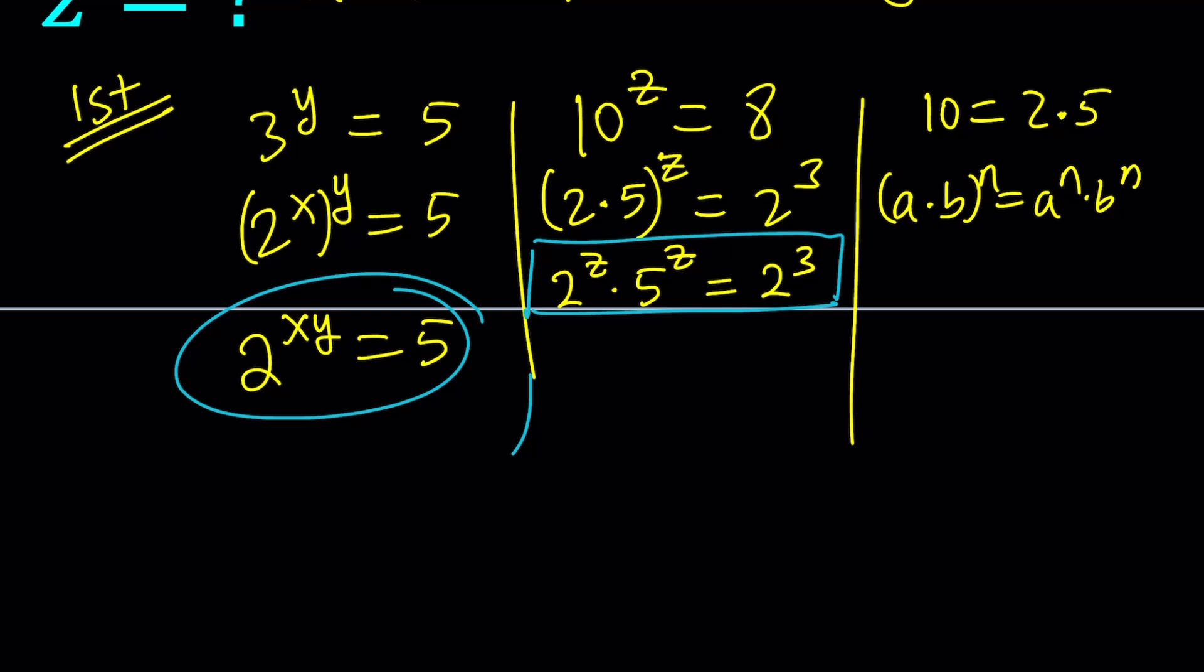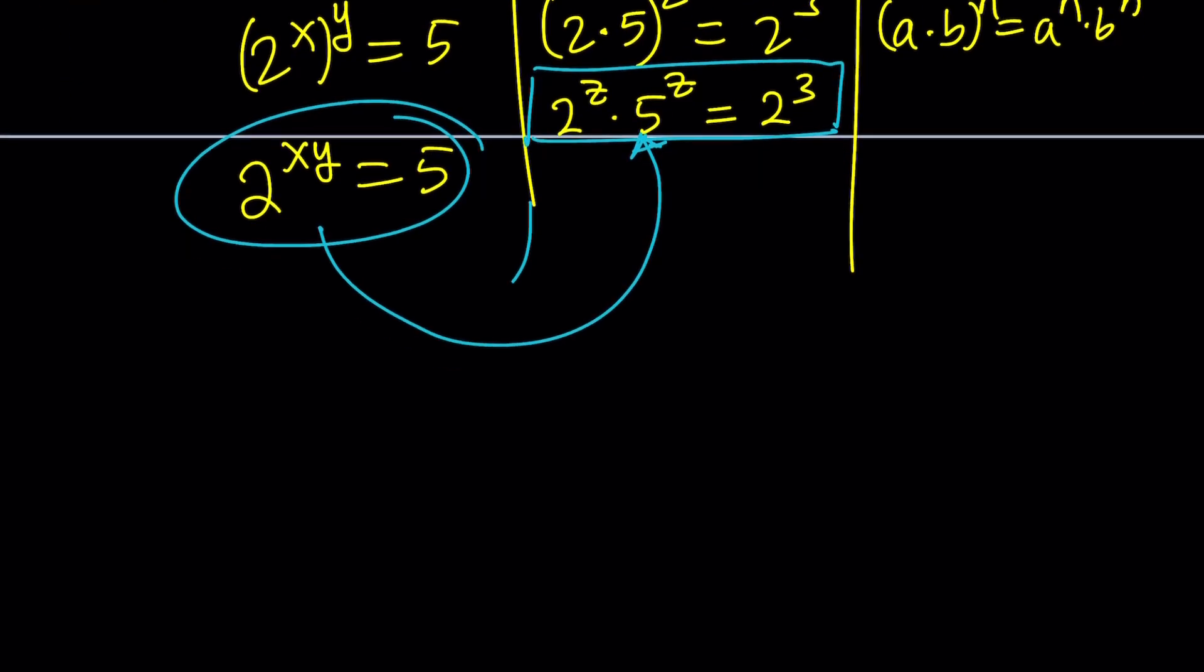You could also do the following. Divide both sides by 2 to the z, and put the 5s and zs on different sides. I mean, 5s and 2s, I meant. But that's not necessary. You can just replace the 5 with 2 to the xy, and you should be good to go. Let's do it.